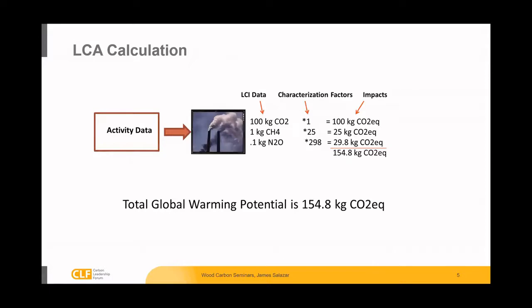In a calculated life cycle assessment, for each of those life cycle stages of a building, we're collecting activity data. That activity data relates back to secondary data sets for things like combustion of fuels. Those data have life cycle inventory values. For instance, burning a certain amount of fuel releases various greenhouse gases — CO2, methane, dinitrogen monoxide. Each of those has a different global warming factor, or characterization factor as we call them: 1 for carbon dioxide, 25 for methane, 298 for dinitrogen monoxide. Those are all summed into an indicator result.